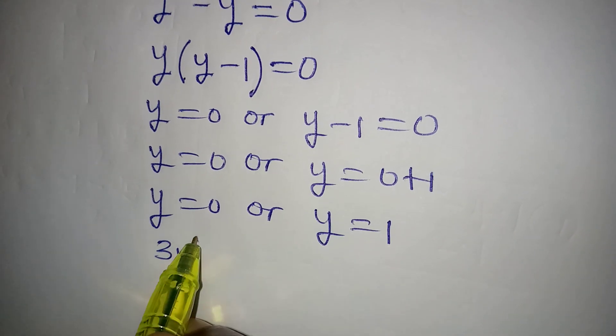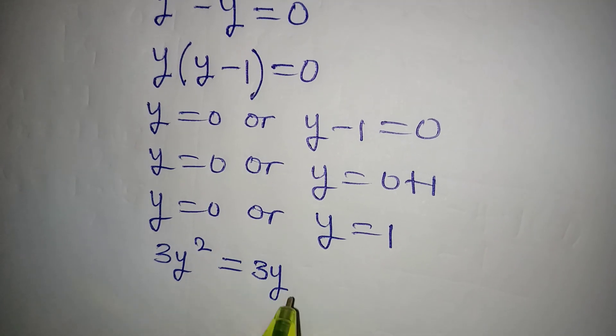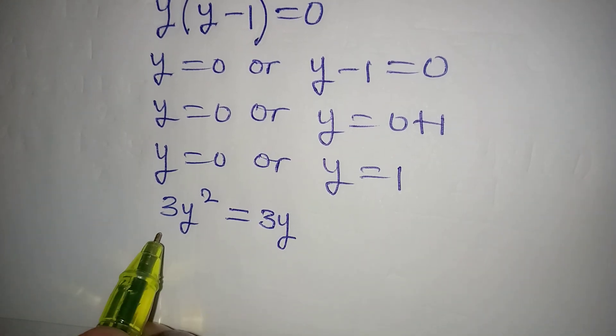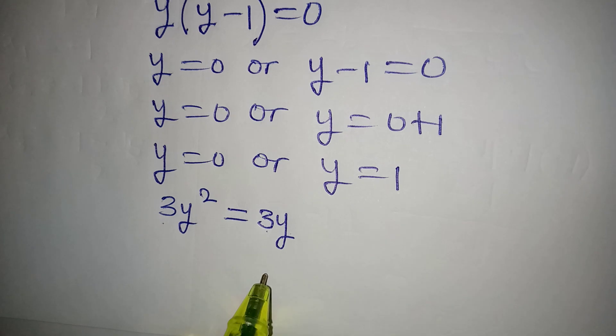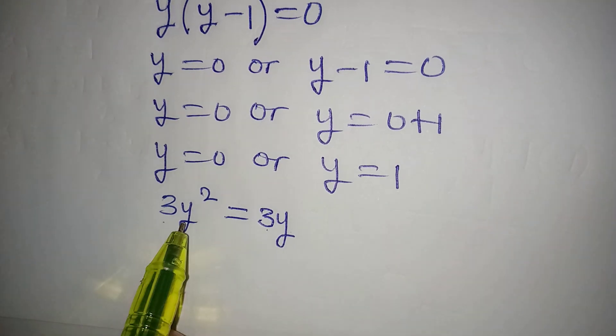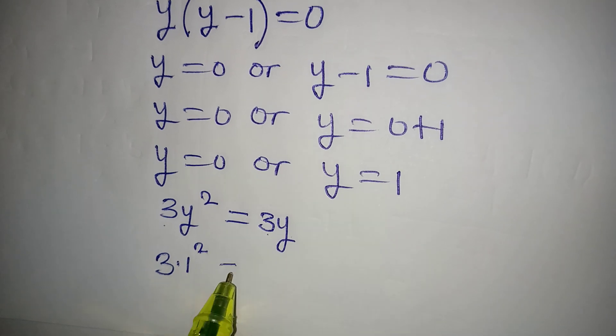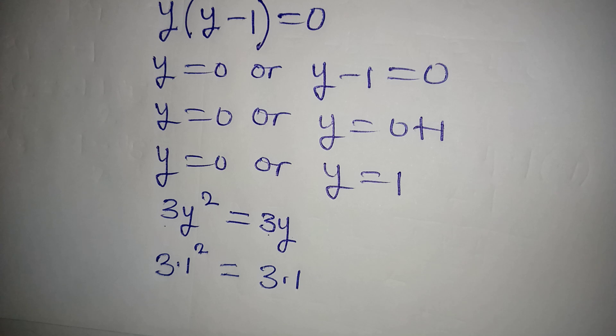What is the equation again? 3y squared equal to 3y. So if we put 0 here, it's going to be 3 times 0 squared, that would be 0. 3 times 0 is still 0. If you put 1 here, it's going to be 3 multiplied by 1 squared, and it is the same thing as 3 multiplied by 1.